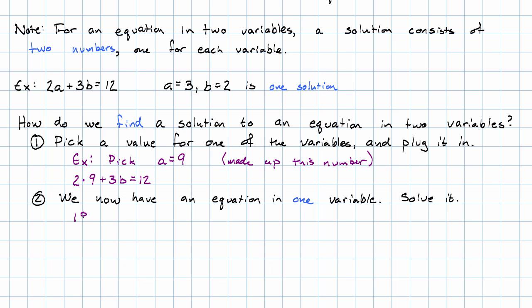So we have 18 plus 3b is 12. We subtract 18 on both sides, 3b is negative 6. Divide both sides by 3, and we get b is negative 2.